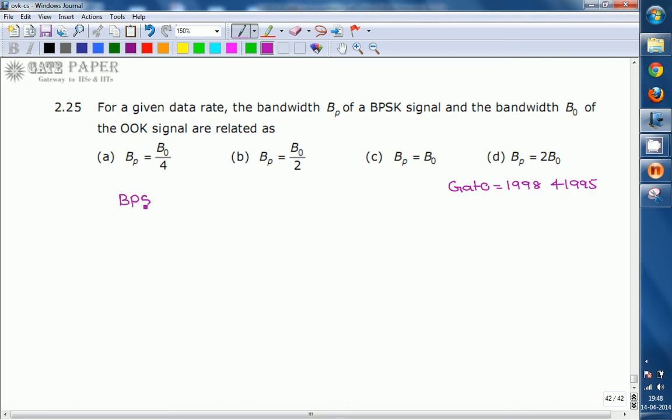The bandwidth of BPSK is denoted by Bp. The other modulation is OOK, which is on-off keying, where BPSK is binary phase shift keying. OOK is nothing but another name for amplitude shift keying, that is ASK. The bandwidth is considered as B0.